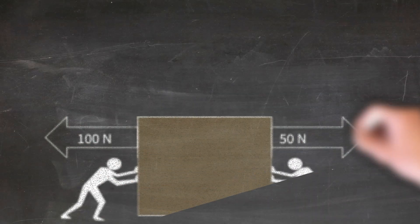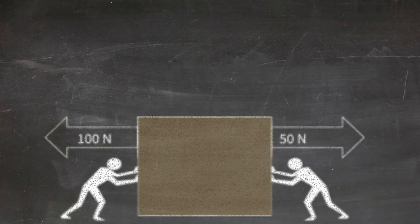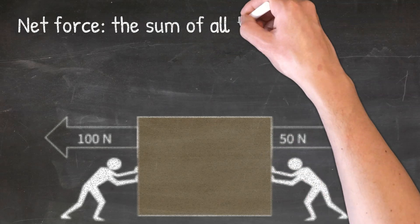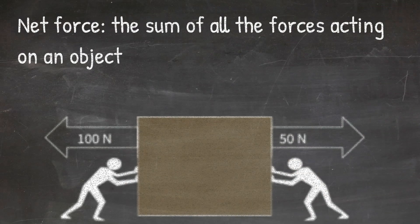When looking at the forces acting on an object, we're not always going to have just one force present. Many times we're going to have two or more forces acting on the object. When this happens, it is important to look at the net force. The net force is just the sum of all the forces acting on the object.